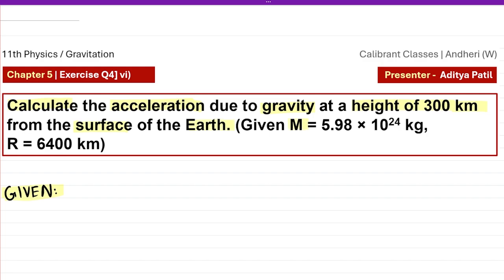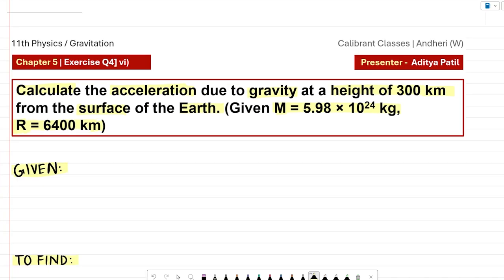Given is the mass of the earth, capital M, that is 5.98 into 10 to the 24 kilograms, and radius of the earth, R, which is 6400 kilometers. This is a question where we are required to calculate the variation in the value of acceleration due to gravity with respect to height.